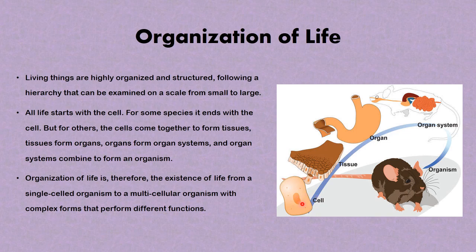As you can see here, in the organization of life, starting out with the cell, a group of similar cells will form tissue, a group of similar tissues will form organs, different organs working together will form the organ system, and all the organ systems working together are bound in an organism.